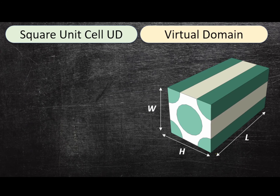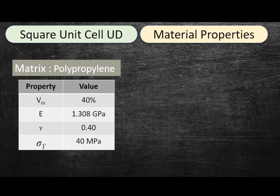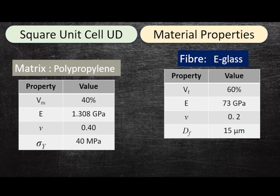Let's consider this is a typical representative volume element of a square arrangement of our unit cell. Here are the dimensions of this composite: a unidirectional composite with a cuboidal shape, with length and height given. The fiber diameter we've chosen is 15 microns. The matrix has a volume fraction of 40% and the fiber is e-glass with a volume fraction of 60%.